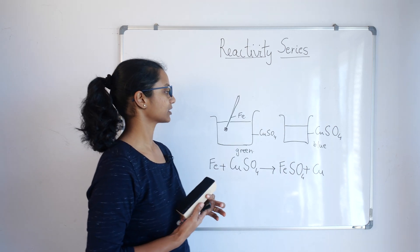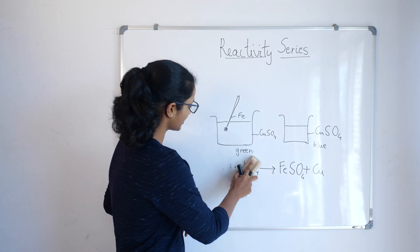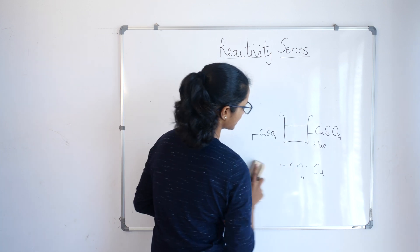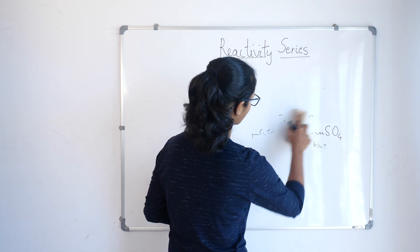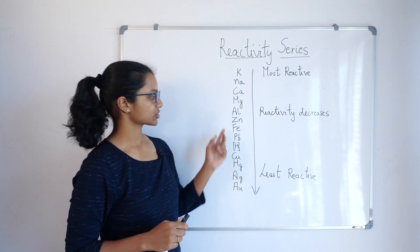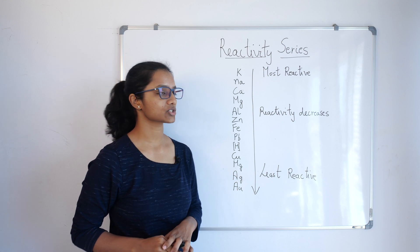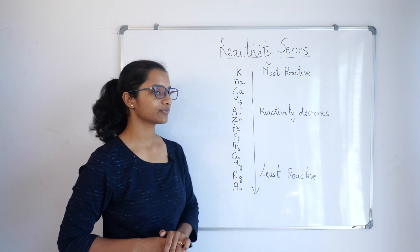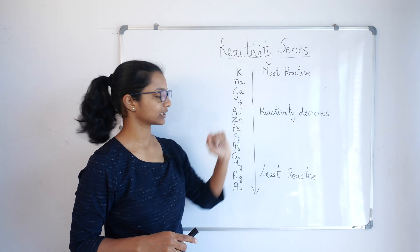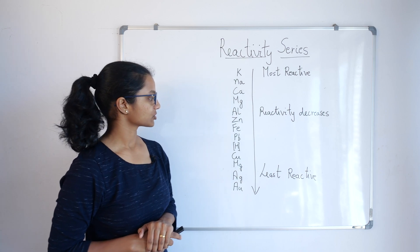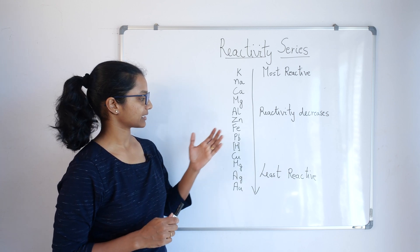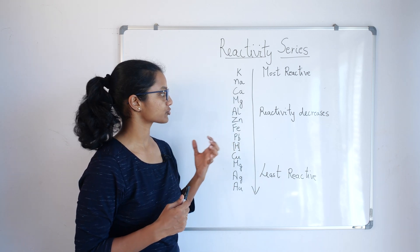With all these experiments conducted, we conclude that the reactivity series is obtained. The reactivity series is a list of metals arranged in decreasing order of reactivity — the most reactive is at the top and the least reactive is at the bottom. This gives us a thorough, in-depth understanding of how reactive and how strong or weak each metal is.